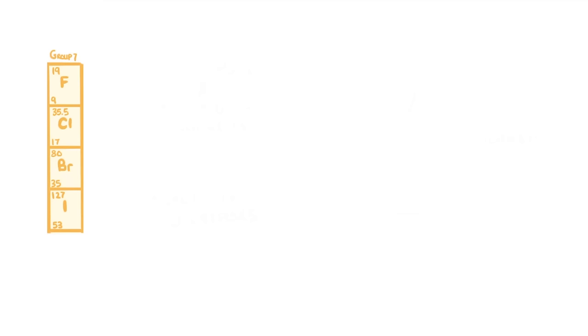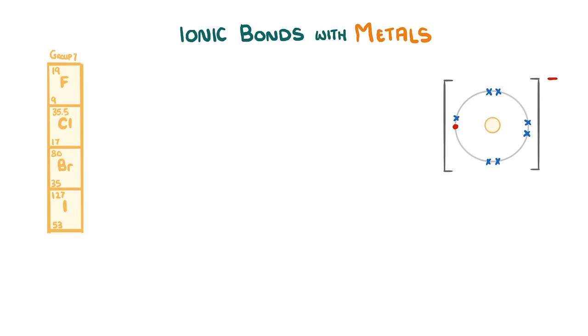The next thing we need to look at is how halogens form ionic bonds with metals. When a halogen gains an electron to form a 1- ion, we call it a halide, and we have to change the name slightly, changing the n's to d's. So we get fluoride, chloride, bromide, and iodide, all of which would be ions.